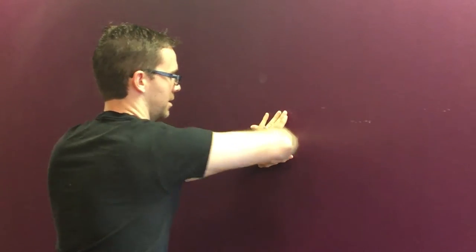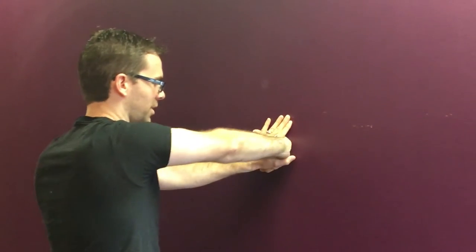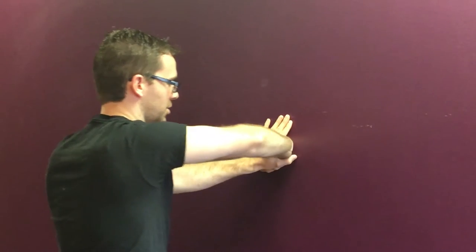Turn the hand this way, and continue with the three to five coming back to that straight, locked out position.